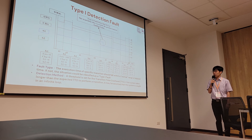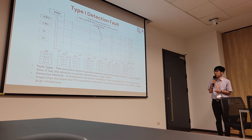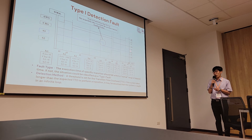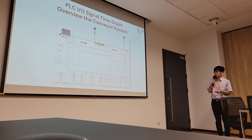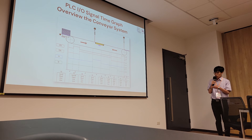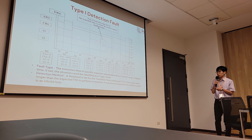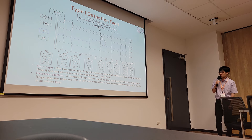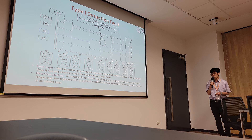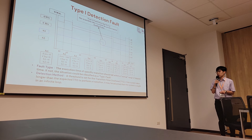For fault detection, the first is the Type 1 detection fault, which is a timing error. In T5 — the state transition between x3 and x5 — the S1 sensor stays at a value of one longer than normal. Normally the S1 sensor activates at x4 and ends at x3, but when there is a fault, the S1 sensor stays active longer. The fault type rule is: the execution time of a specific transition should fall within a normal range; if not, it is classified as a Type 1 fault. The detection method is by setting a threshold for the TTO — the transition time overhead — so if the system takes longer than expected to perform a transition, we assume there is a fault.